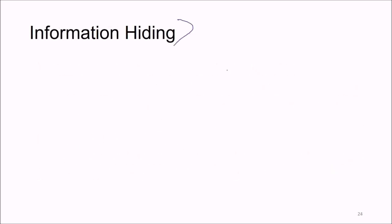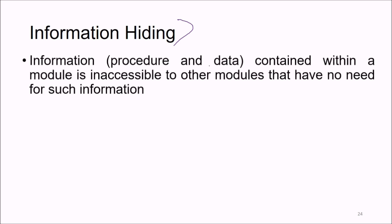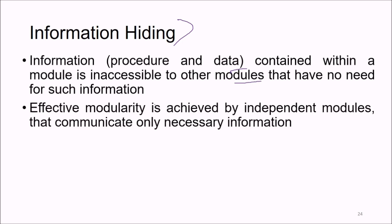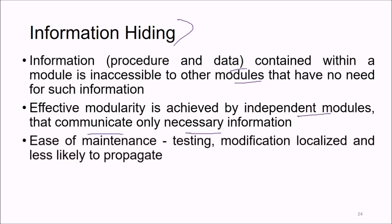Information hiding means that information — both procedure and data — is contained within a module and is inaccessible to other modules that have no need for it. Effective modularity is achieved by independent modules that communicate only necessary information. This provides ease of maintenance, testing, and localized modification, ensuring problems are not propagated across the system.